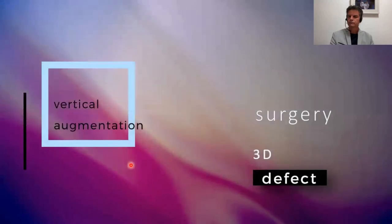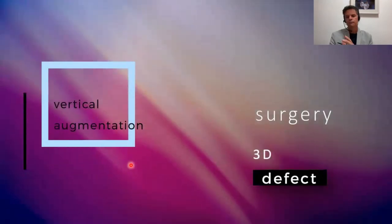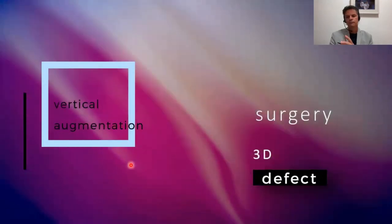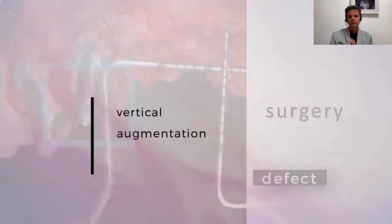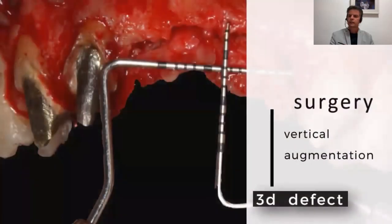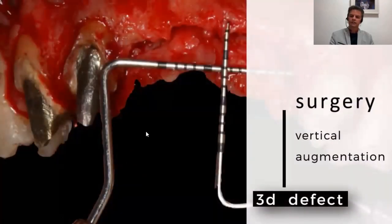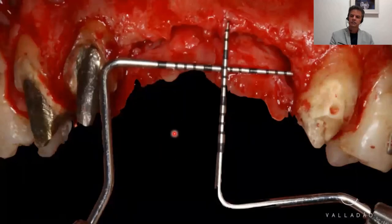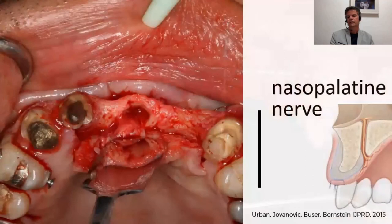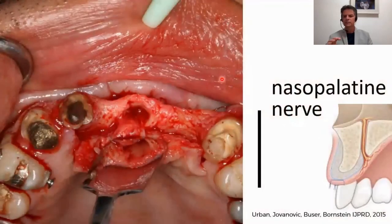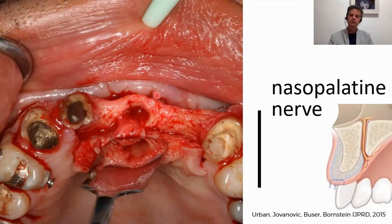Let's move on to the GBR surgery. I'd like to draw your attention to the pronounced vertical bone deficiency in this clinical image. We opted for a partial lateralization of the nasal palatine bundle, as described by Urban, Jovanovic, Boozer, and Bernstein in 2015.